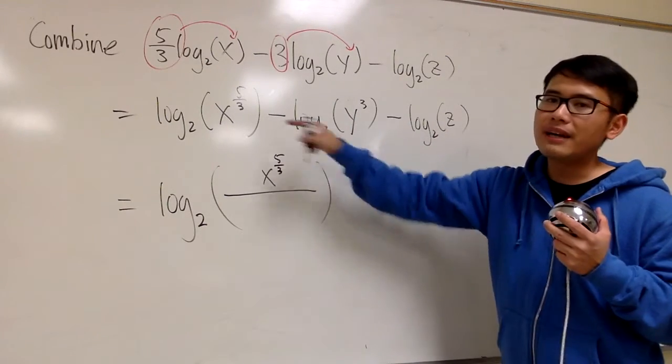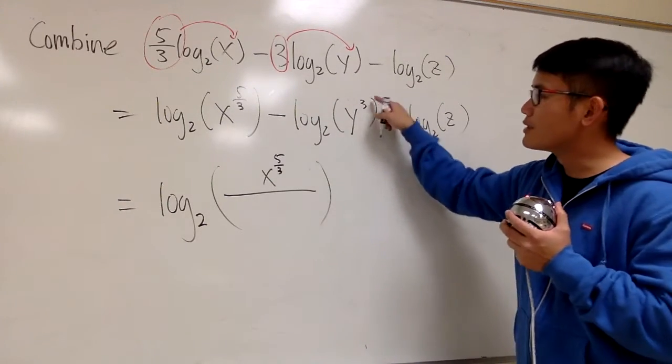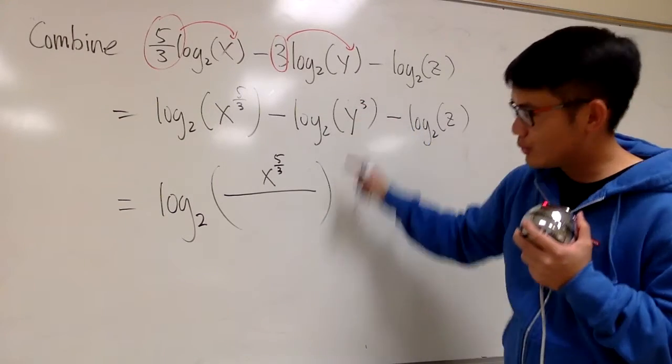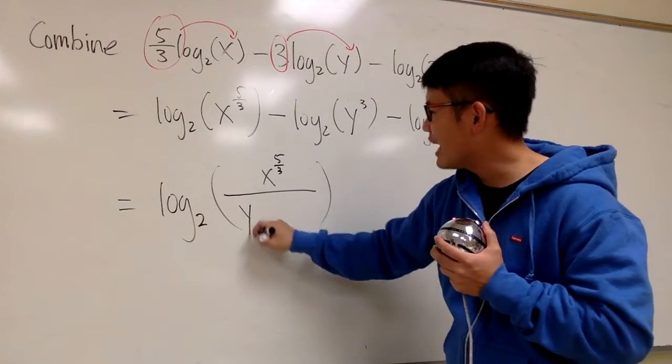Well, this term is minus. Therefore, y to the 3rd power will go to the denominator. So we have y to the 3rd power.